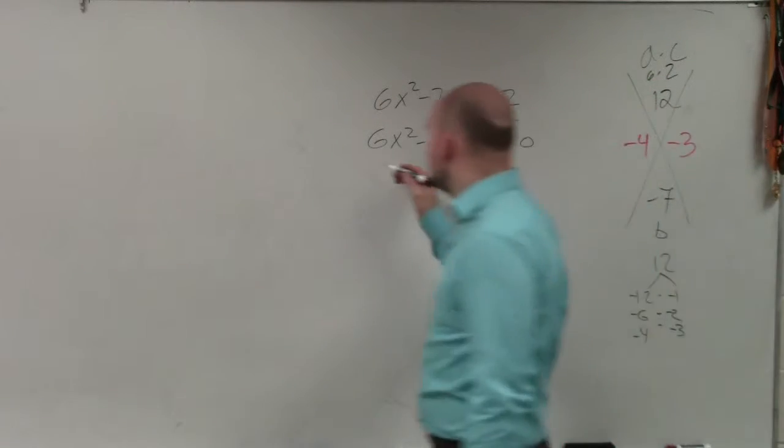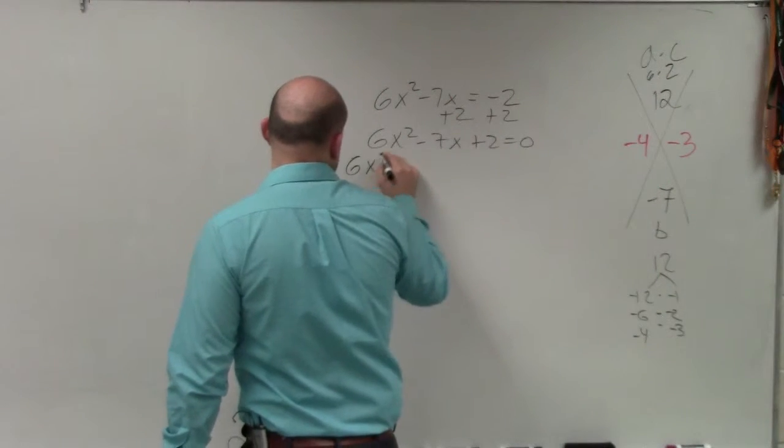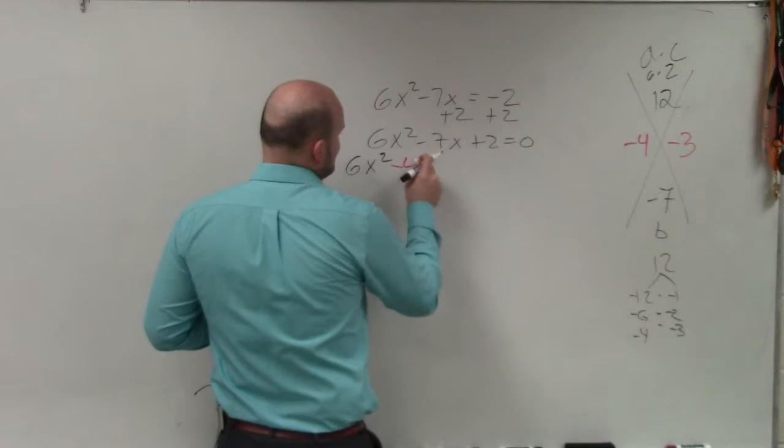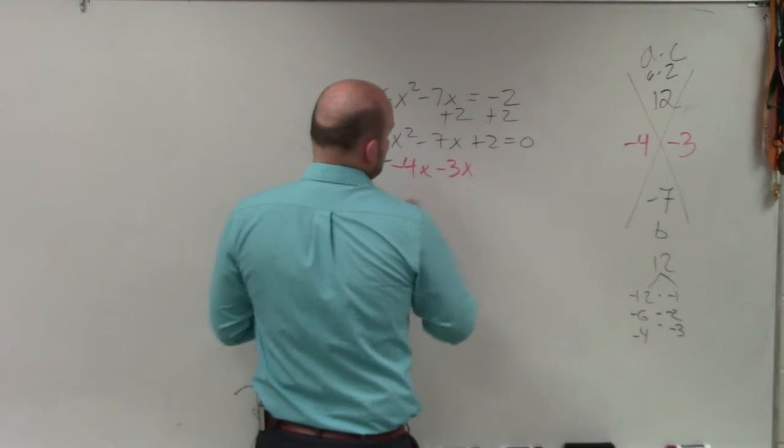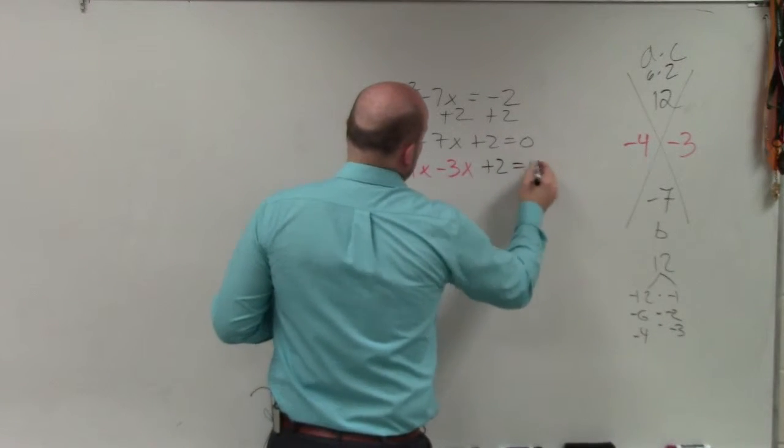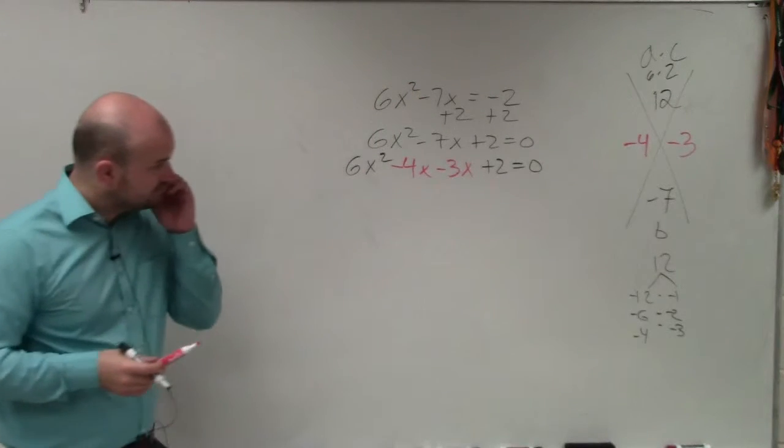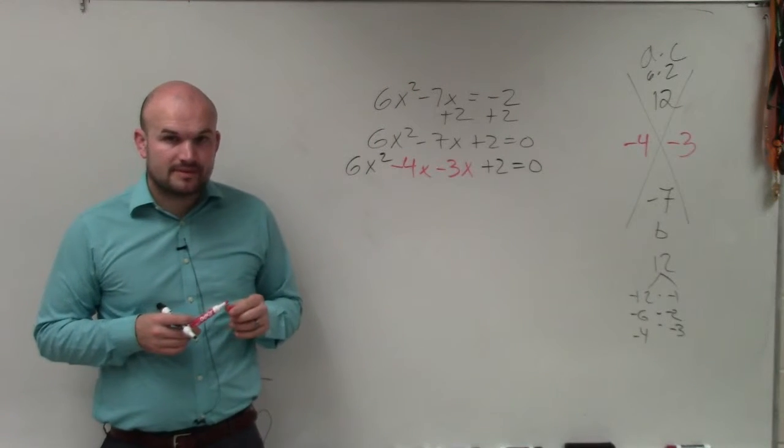So therefore, I can rewrite my equation as 6x squared minus 4x minus 3x plus 2 equals 0. Does everybody see that?